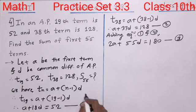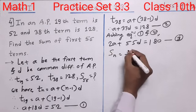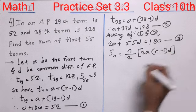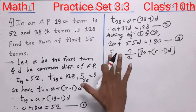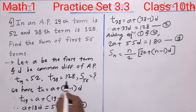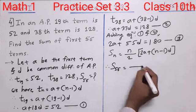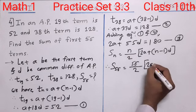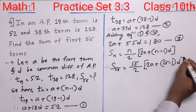Now we write the formula for the sum of N terms and use it to find S56. SN equals N upon 2 in square bracket 2A plus (N minus 1) into D. For S56, we substitute N = 56: S56 equals 56 upon 2 in square bracket 2A plus (56 minus 1) into D.